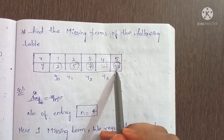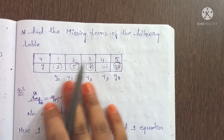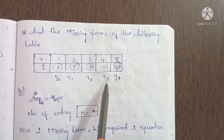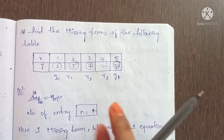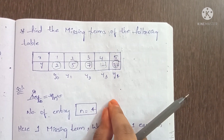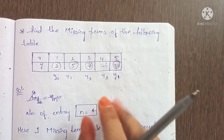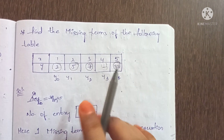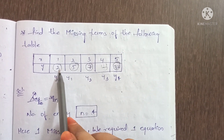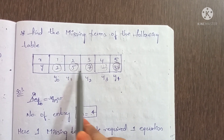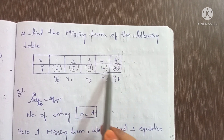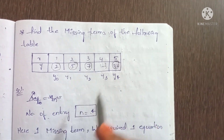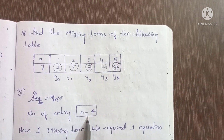Total is five terms: y0, y1, y2, y3, y4. The number of entries: looking at x values 1, 2, 3, 4 — that gives us 4 entries, so n equals 4.